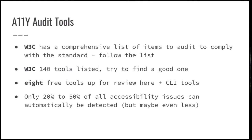Which tools do you use for an accessibility audit? There are about 140 tools listed on the W3C website. That's quite a lot to try to find out if your website is accessible or not. So I chose eight free tools and some CLI tools that I thought, oh, maybe I can just incorporate into my CI, run it on schedule, and report results. And the accessibility automatic tests are only 20 to 50% reliable — but I think they're actually less reliable than that.